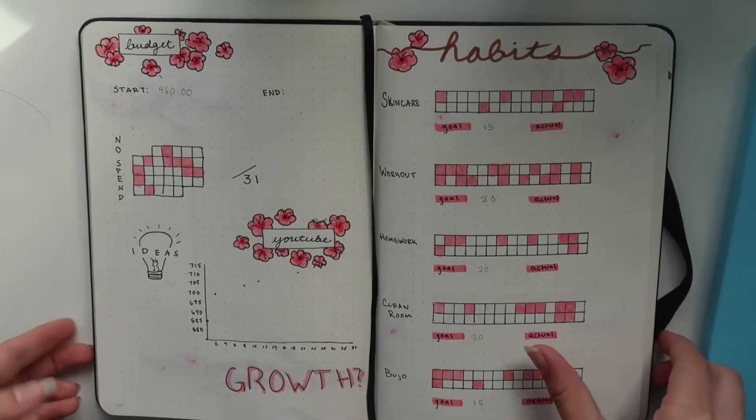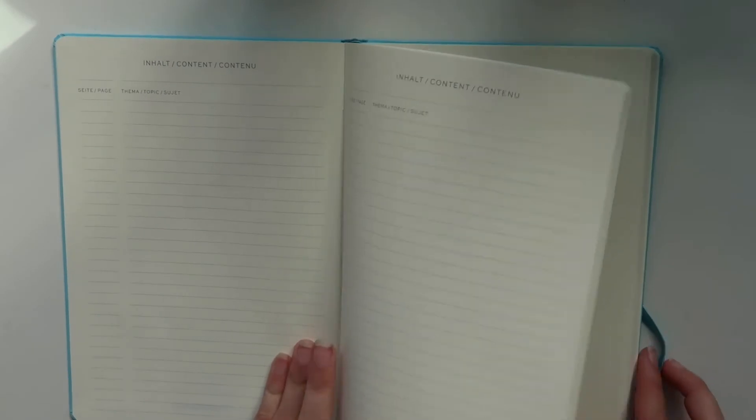I'm really excited to start my new bullet journal for June. This is a Leuchtturm 1917 journal. It is light blue, it has a table of contents, regular dot grid, it has two ribbons. I like these ones, but I definitely liked the ribbons in my old bullet journal better. They were like satin ribbons. This bullet journal was a...